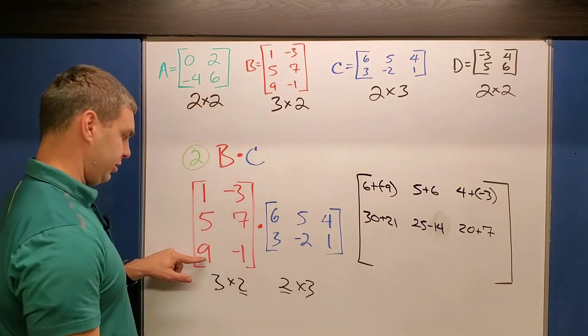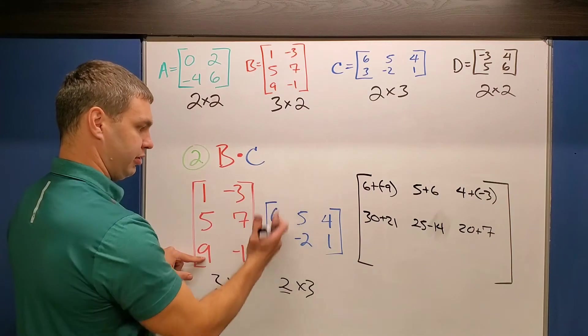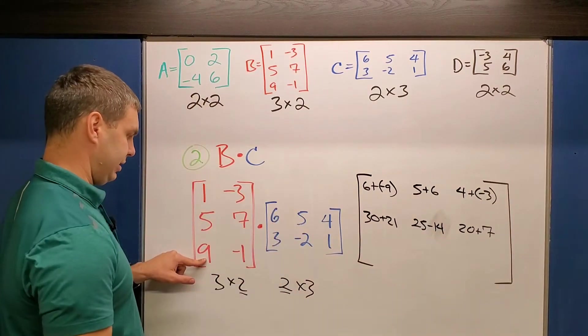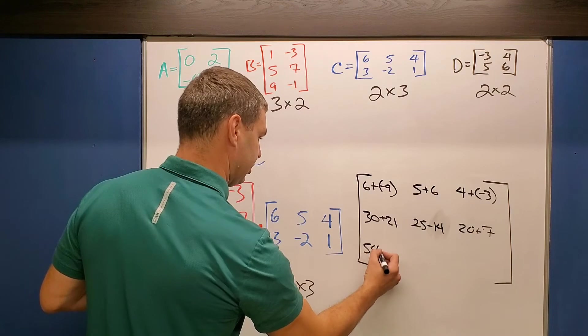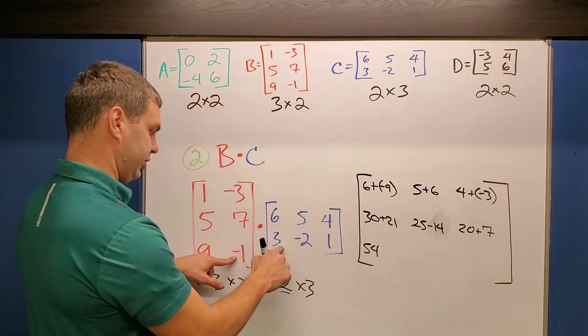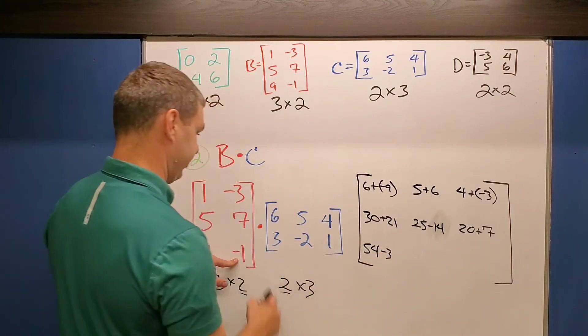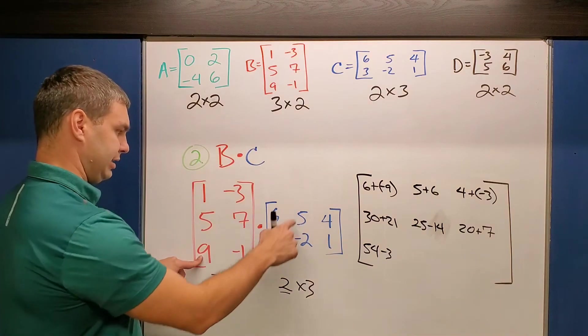Almost done here. Last row times our first, second, and third columns. 9 times 6 is 54. -1 times 3 is -3. 9 times 5 is 45.